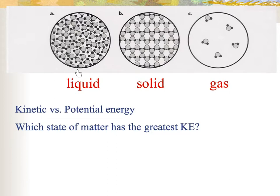Then we have a liquid. Over here is a picture representing a liquid. Notice that the particles are not stuck in the rigid structure — now the particles are able to move around freely. They're able to what we call slip and slide past each other.